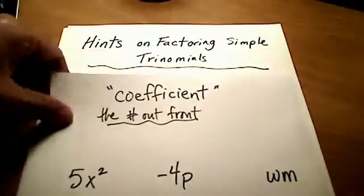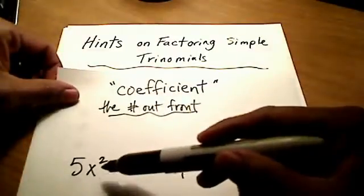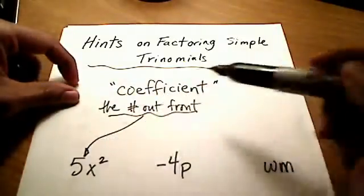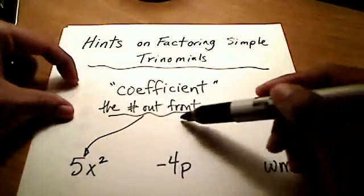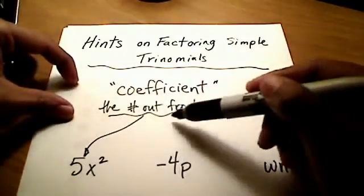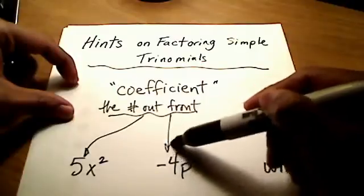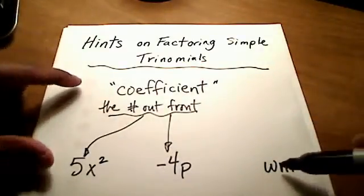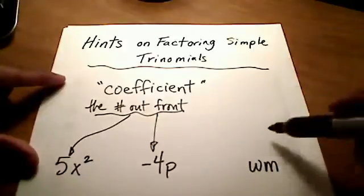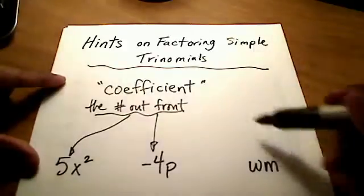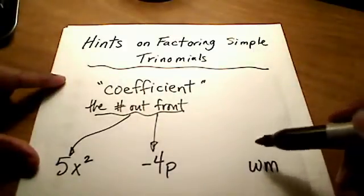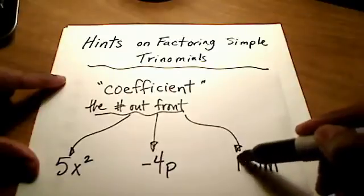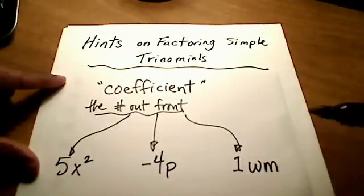So what is the coefficient here for this first term? It's just a 5. The coefficient for this negative 4p is just a negative 4. What if you see something like wm, and there is no number out front? Well, if you don't see one, there actually still is a coefficient, and it's an understood 1.